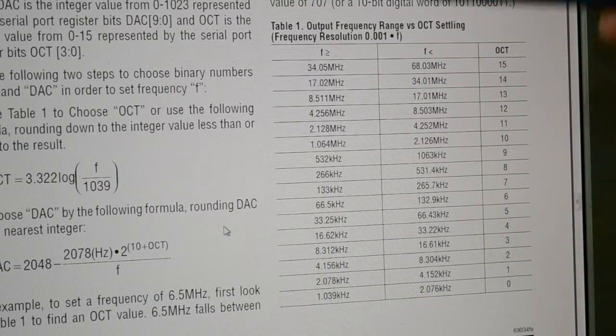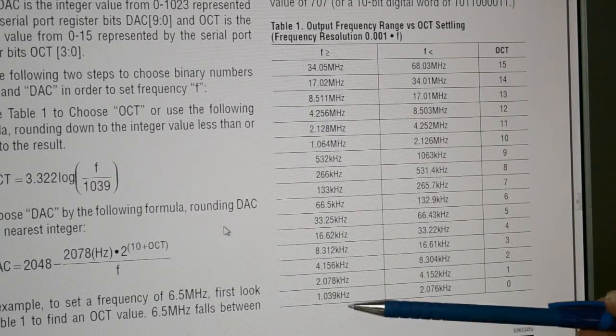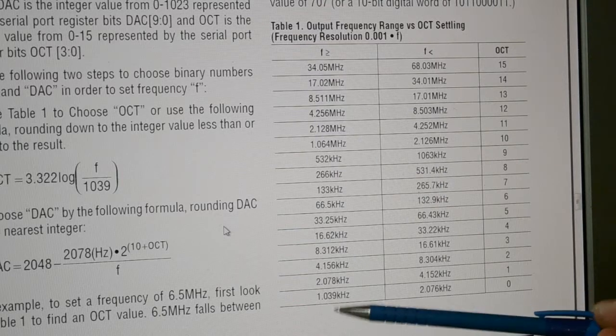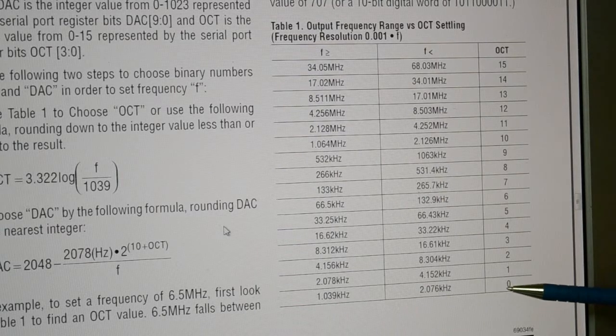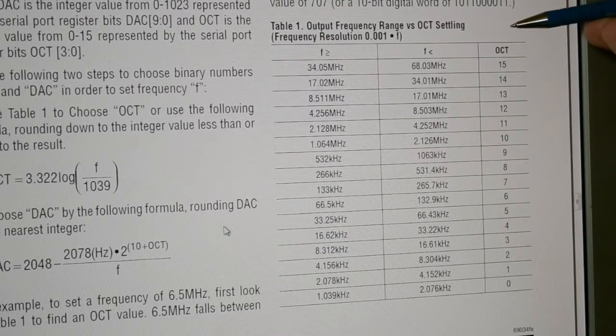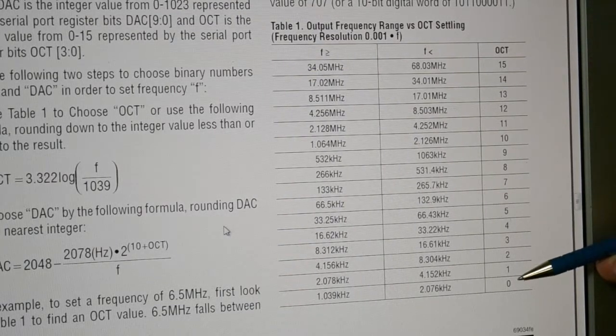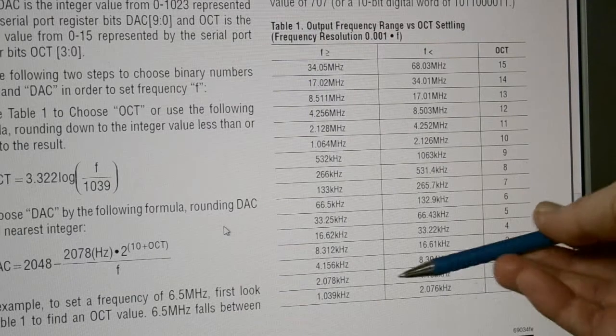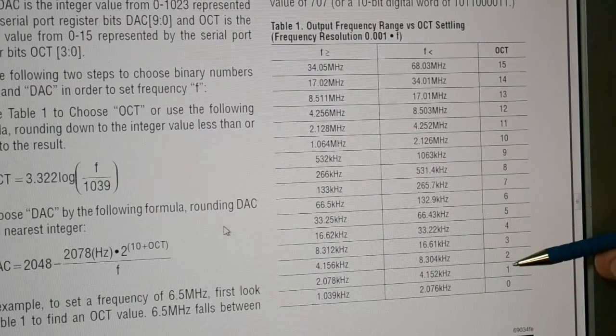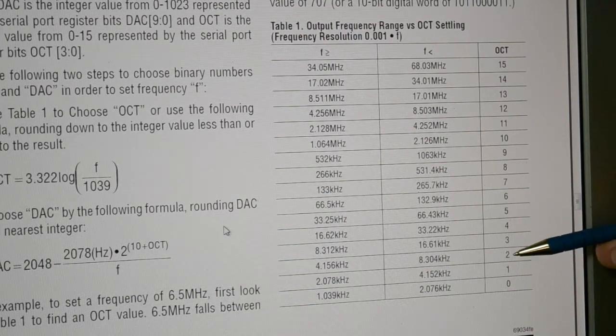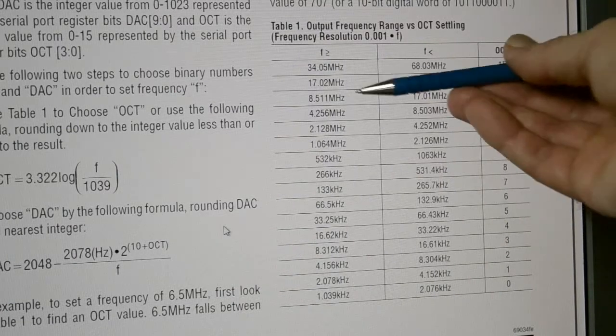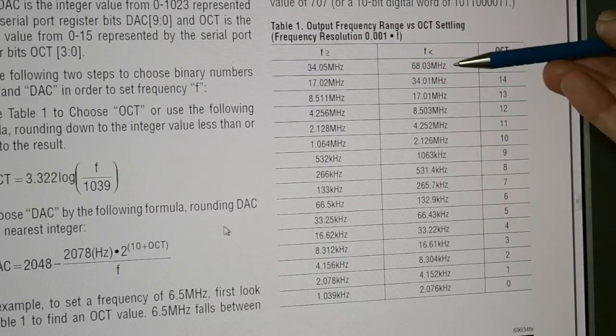So now if you look at the frequencies, by default when you turn it on and don't program it, it starts at 1 kHz, which is octave 0. For various frequencies, look at this oct, so oct for octave. So for example, 2 kHz to 4 kHz, octave 1. 4 kHz to 8 kHz, octave 2. Jump 34 MHz to 68 MHz, octave 15.